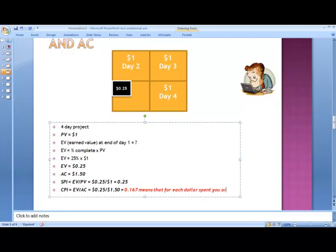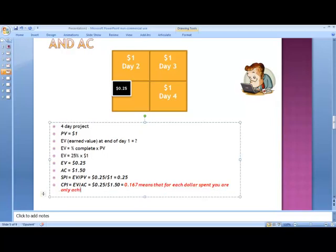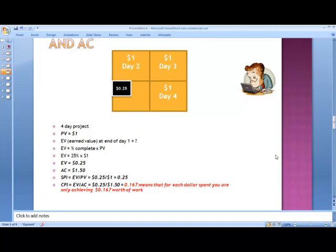What this means is that for each dollar spent, you are only achieving $0.167 worth of work. In other words, you're only getting 17 cents worth of work done for each dollar you spend. That is very, very bad. Not good at all. So you spend a dollar and you get 17 cents of work done.